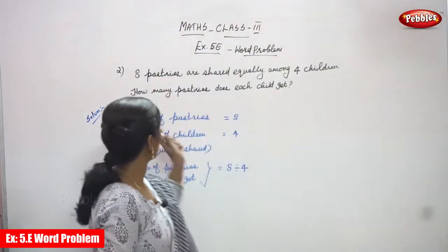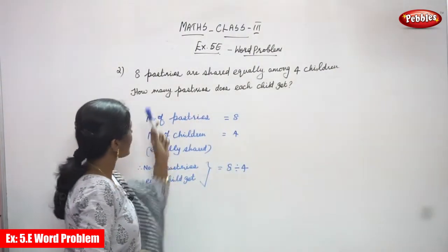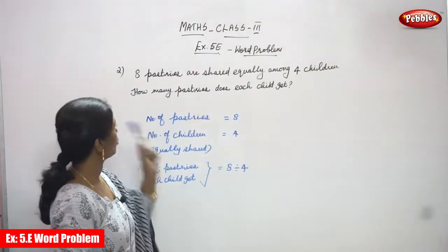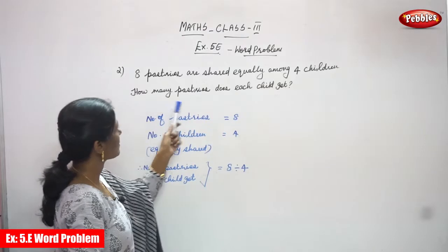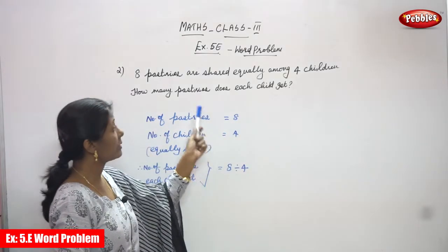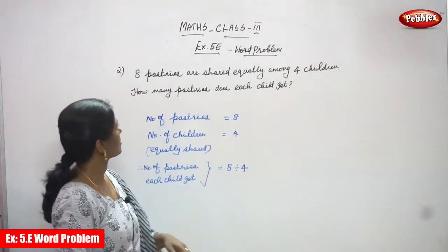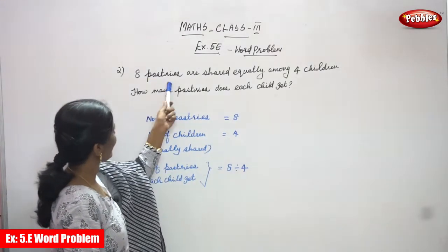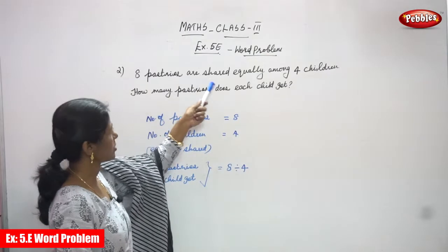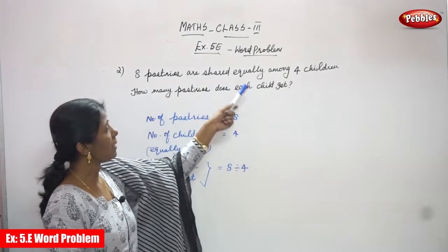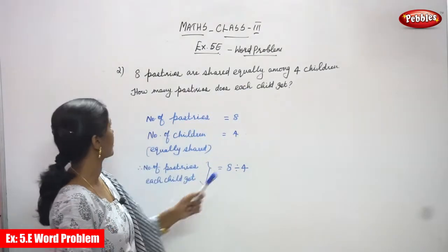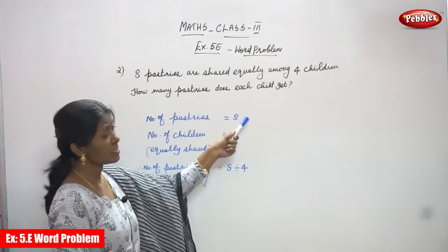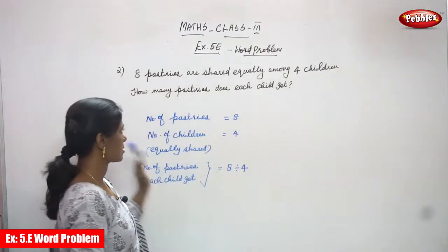Now we are going to do the second sum. 8 pastries are shared equally among 4 children. How many pastries does each child get?